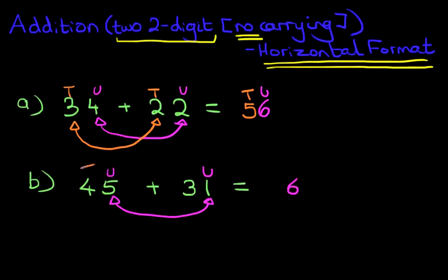Now the tens. We've got four plus three. Four plus three is seven. 45 plus 31 is 76.